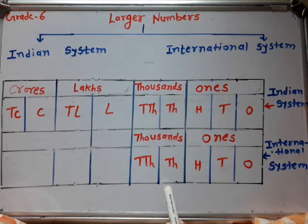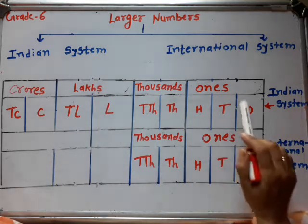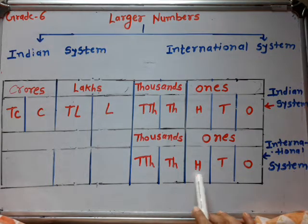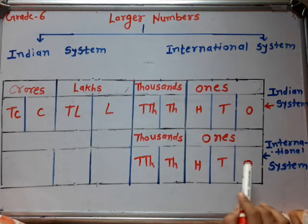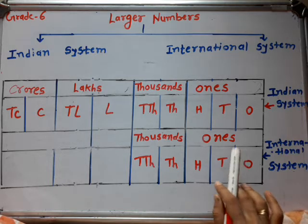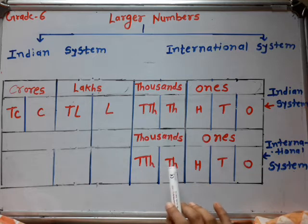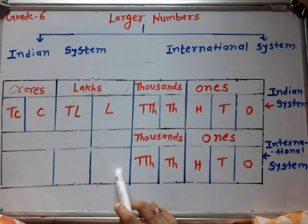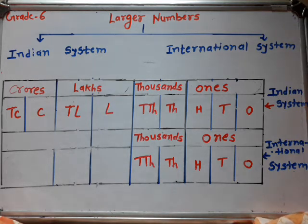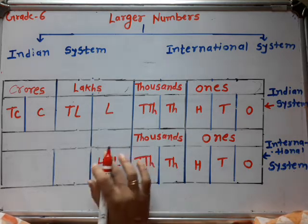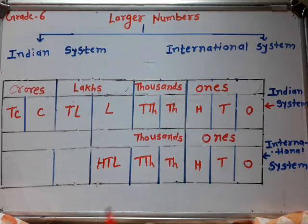This is the Indian place value system. But in the international place value system, the ones period is the same — divided into ones, tens, hundreds. The thousands period is divided into thousand and ten thousand. But after ten thousand, there is also hundred thousand. This hundred thousand is a new place in the international place value system.